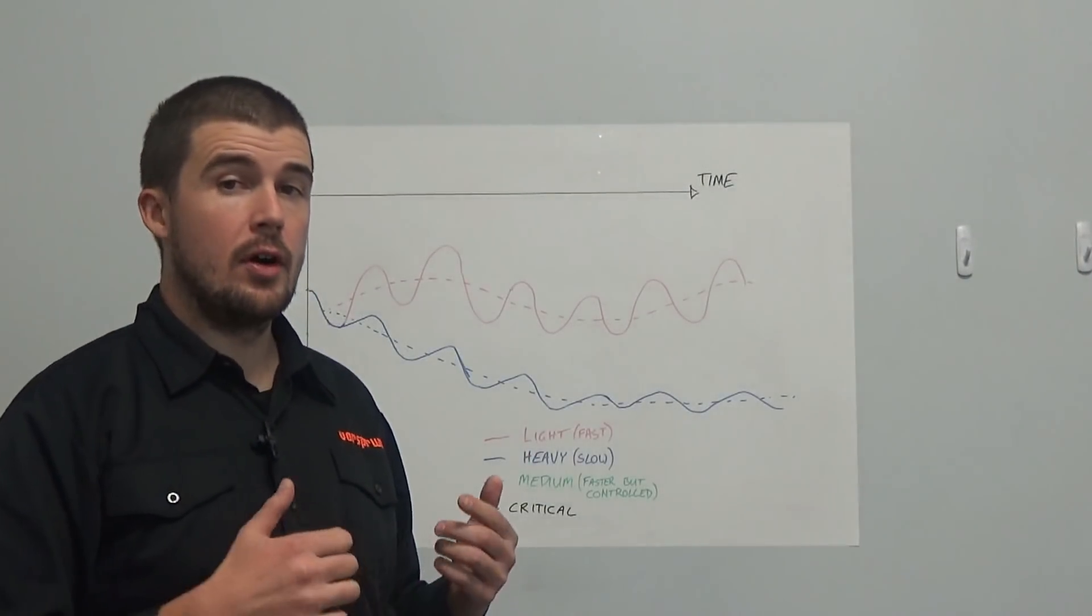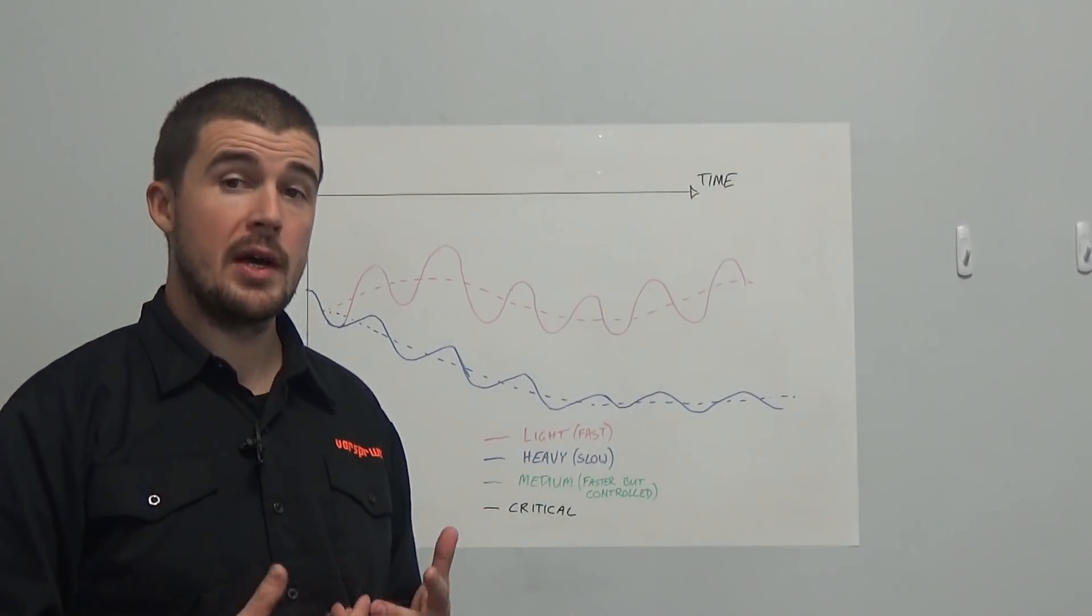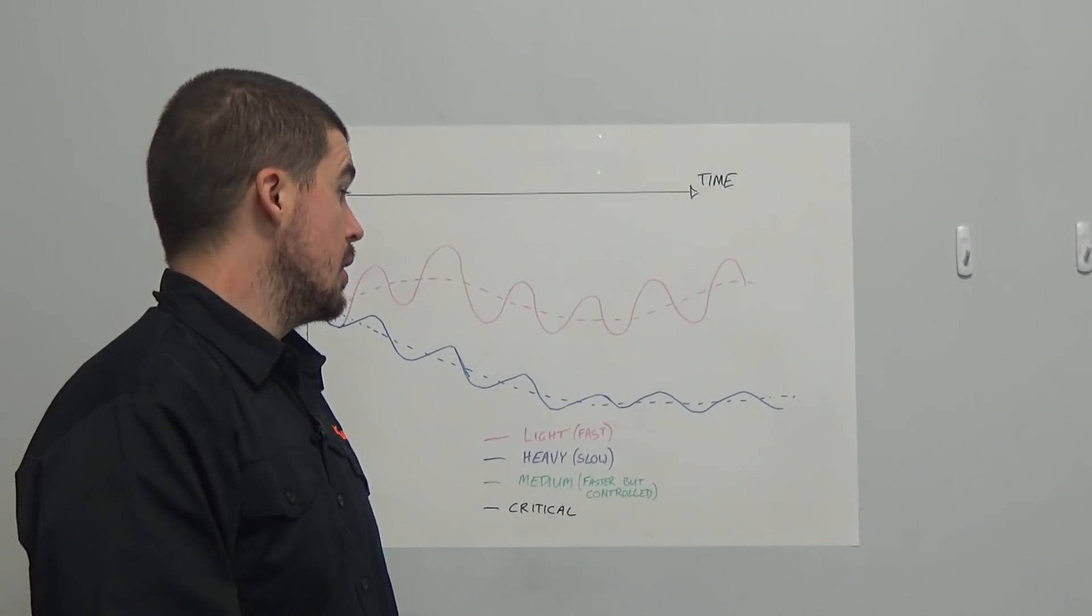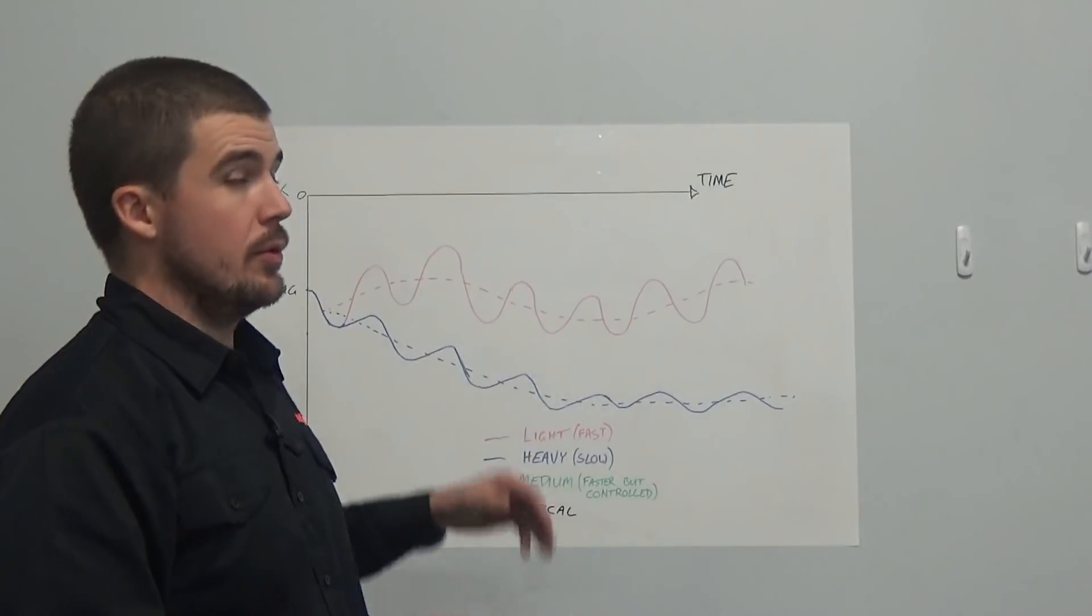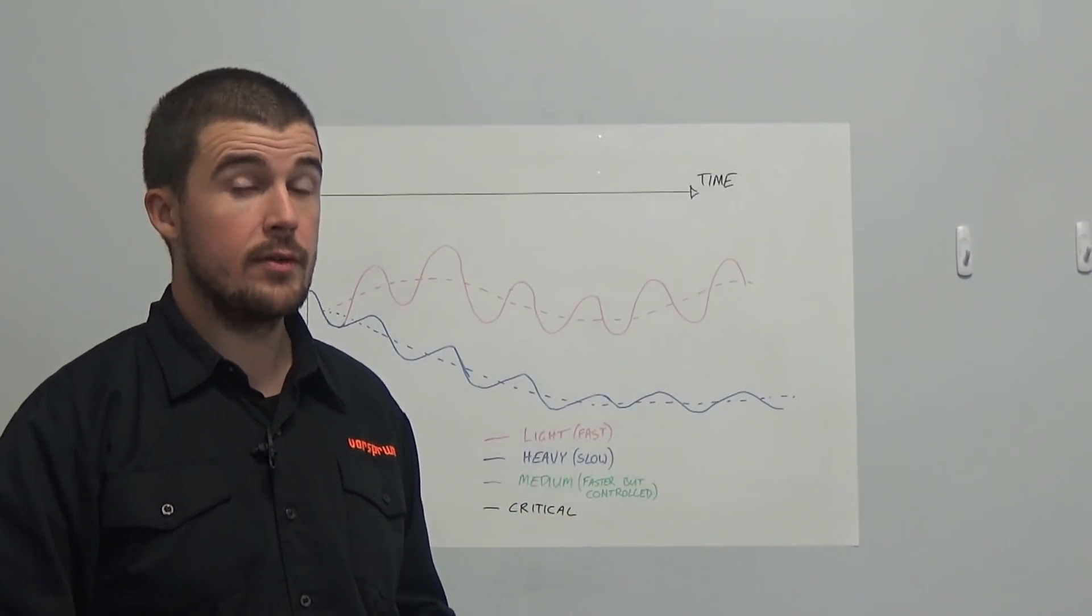So regardless of what adjusters you have, whether that be high and low speed rebound or beginning and ending stroke, as they were termed on the vivids, these principles are applicable to every aspect of your rebound setup.